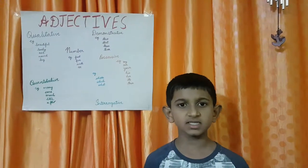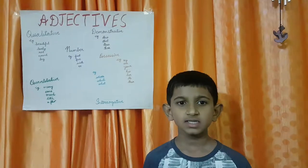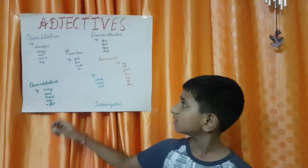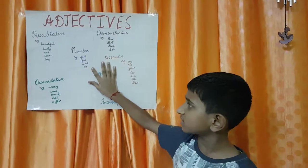Adjective of Number tells about the exact number. For example, First, Five, Sixth, Ninety-Nine.